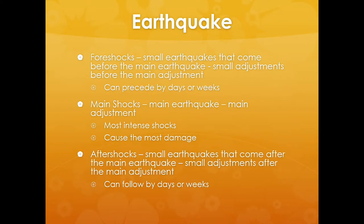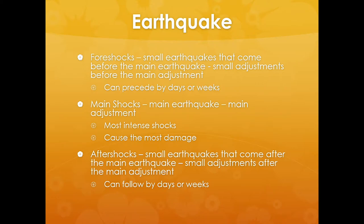We've talked about foreshocks — those are the small earthquakes that come before the main earthquake. These are typically small adjustments that happen right before the main adjustment, and they can precede it by days, weeks, or months. Then there's the main shock, the main earthquake — this is where the main major part of the energy is released and where most damage occurs. And then we have aftershocks, which are small earthquakes that come after the main earthquake — small adjustments that can follow by days, weeks, months, even years.